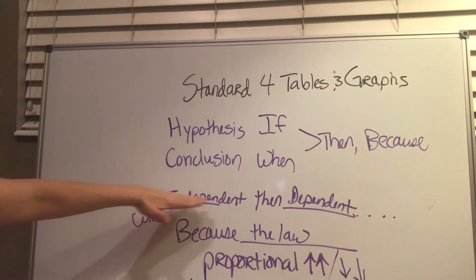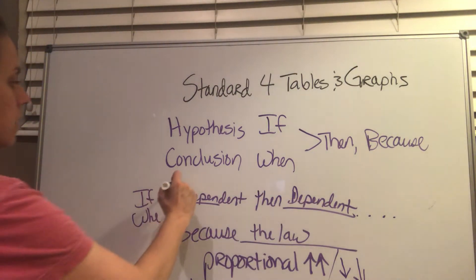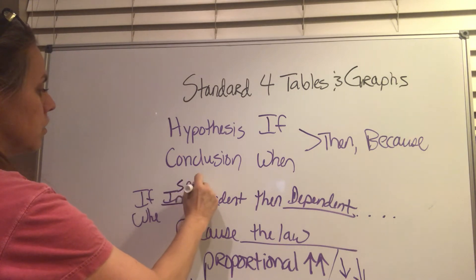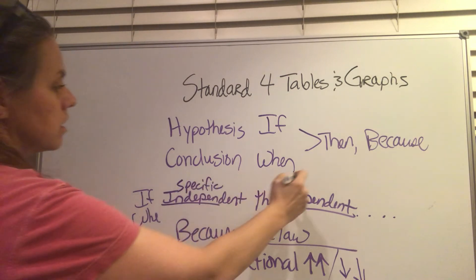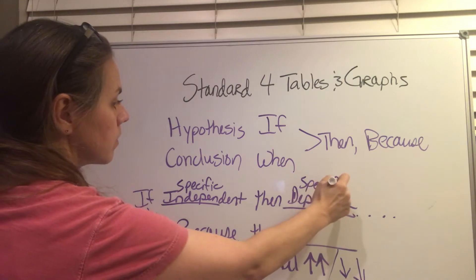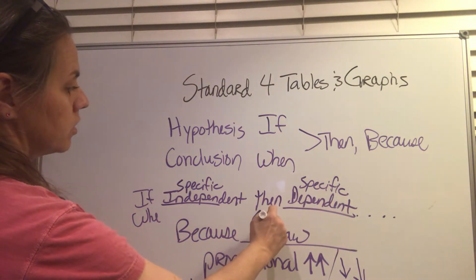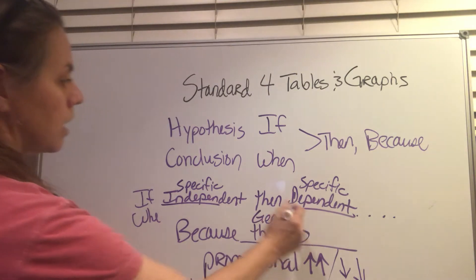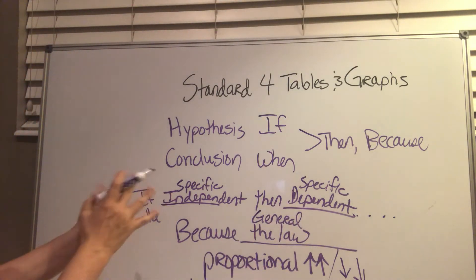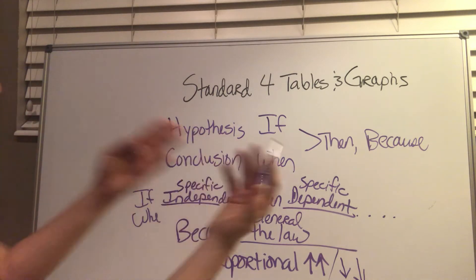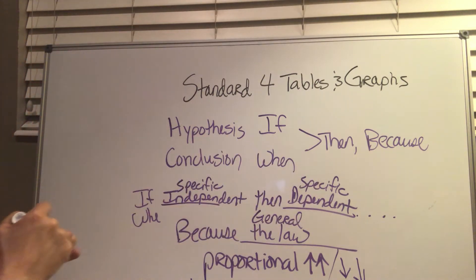So here you get specific, the specific independent variable. You talk about that. The specific dependent variable. And then this is general. Because this is the general law that happens among all these types of specific independent variables when they associate with these specific types of dependent variables.